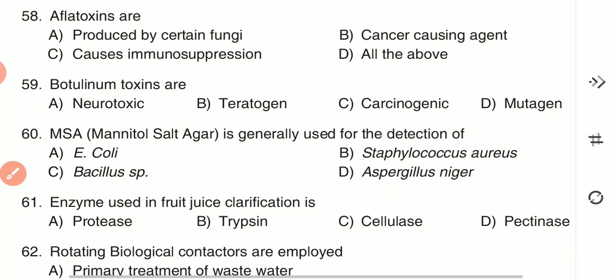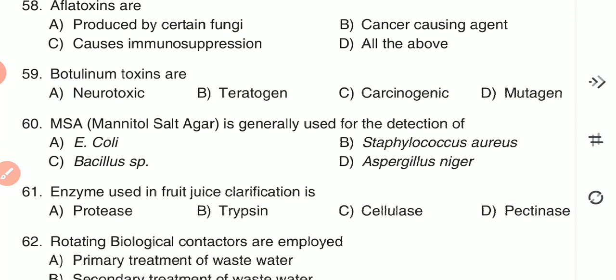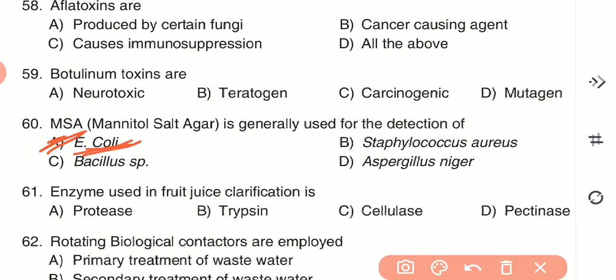Question 60: Mannitol salt agar (MSA) is generally used for the detection of — E. coli species, Staphylococcus, Salmonella, or Listeria. Option A is the correct answer.